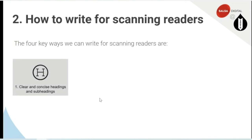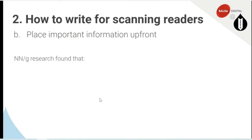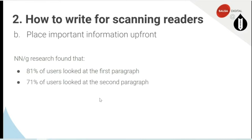Now let's look at placing important information up front. Going back to the Nielsen and Norman research, these are some really good stats. 81% of users looked at the first paragraph — this is eye-tracking where they're literally looking at where the person is looking. 71% of users looked at the second paragraph. 63% of users looked at the third paragraph. So already by the time we get to the third paragraph, we're starting to get a drop.